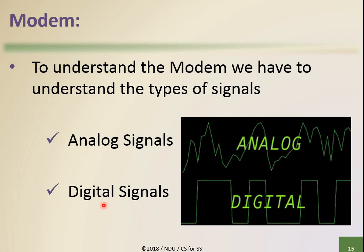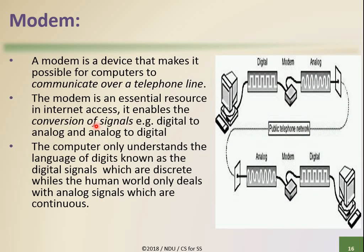Here we see an example in which a modem is available and a computer at one location is producing digital signals. Then we have a device which converts this digital signal for longer distance transmission over the telephone network. So we need a conversion from digital to analog signal, and we have a modem here performing that conversion. After converting to analog signal, the transmission is done through the network.